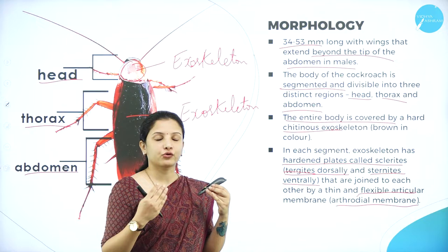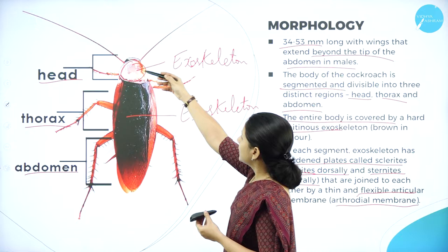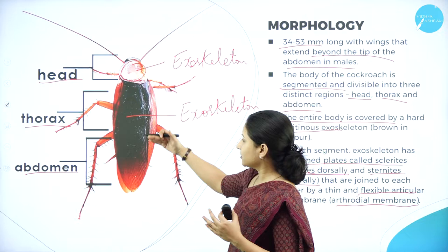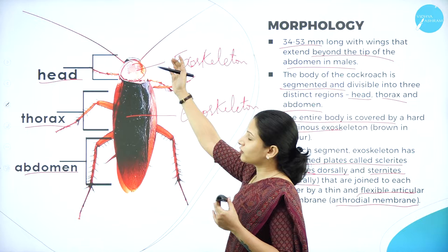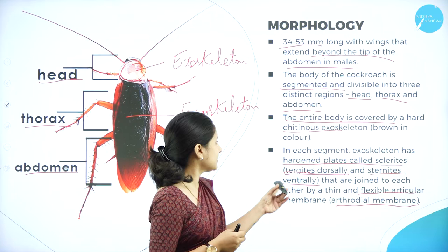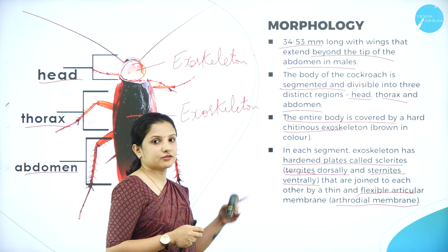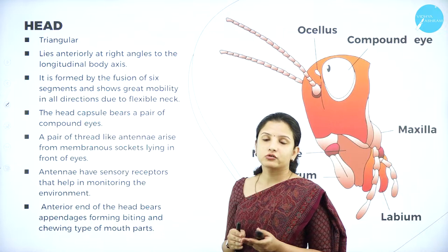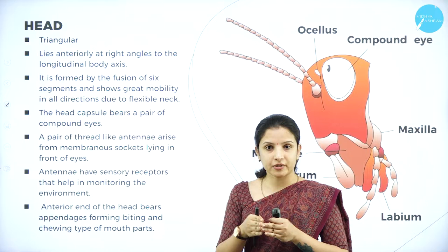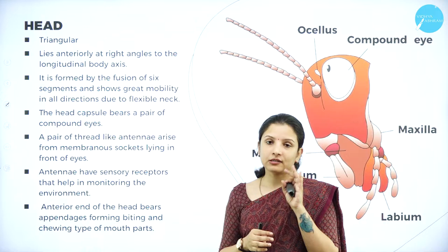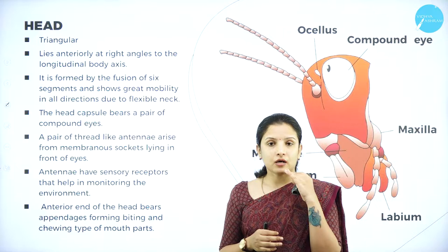The arthrodial membrane connects the exoskeleton plates — for example, the head has a separate exoskeleton and the other body parts have separate exoskeletons, and these skeletal plates of the head, thorax, and abdomen are all connected by this thin and flexible arthrodial membrane. Moving on to the different body segments: the cockroach is divided into three important parts — the head, the thorax, and the abdomen — and we shall study each of these one by one.